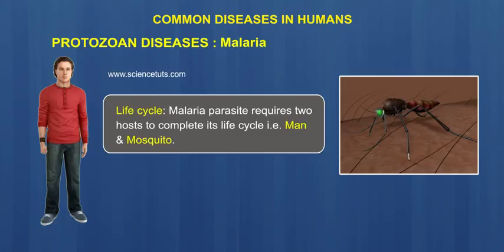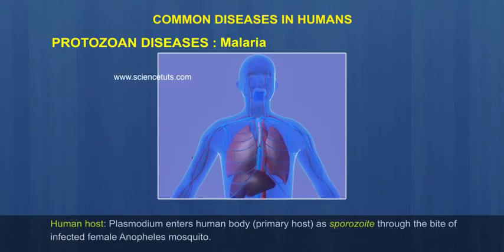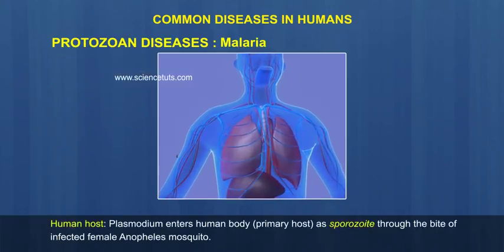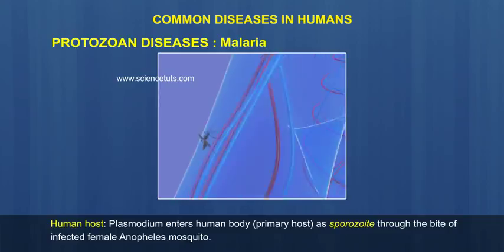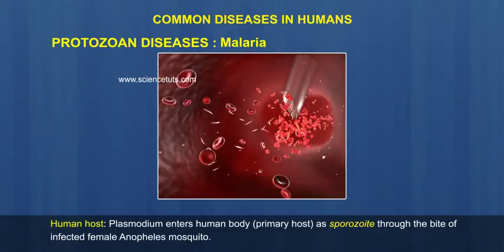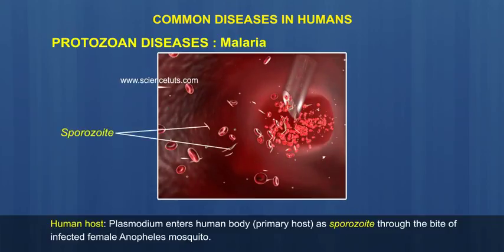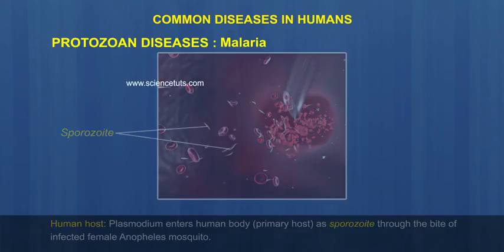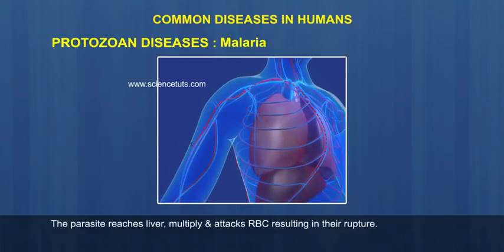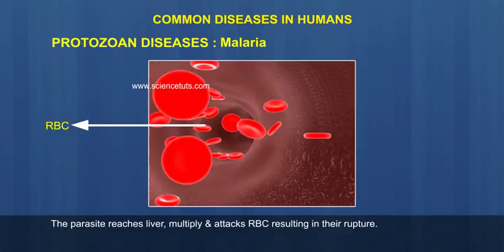Life cycle: The malaria parasite requires two hosts to complete its life cycle — man and mosquito. In the human host, Plasmodium enters the human body as a sporozoite through the bite of an infected female Anopheles mosquito. The parasite reaches the liver, multiplies, and attacks red blood cells (RBCs).